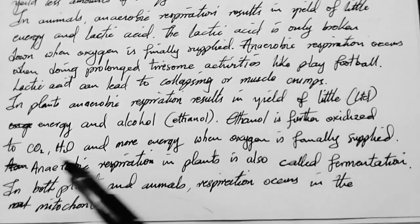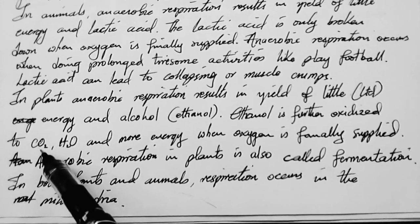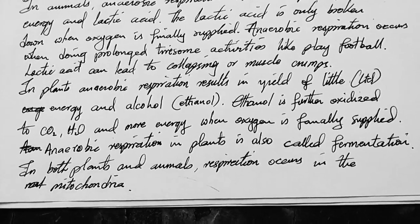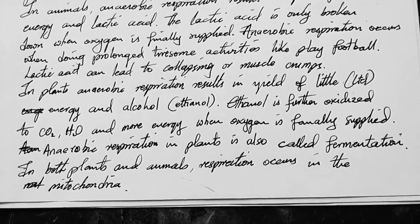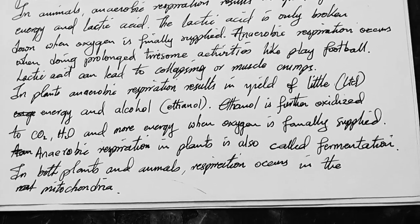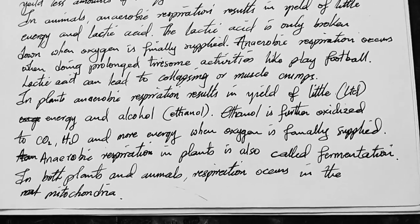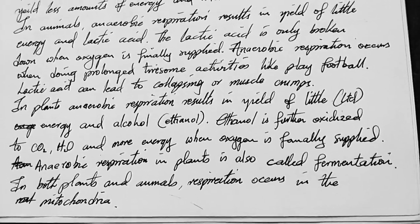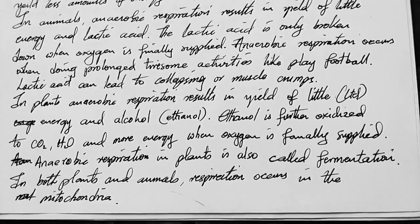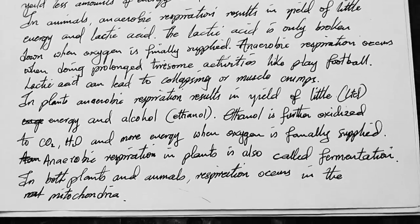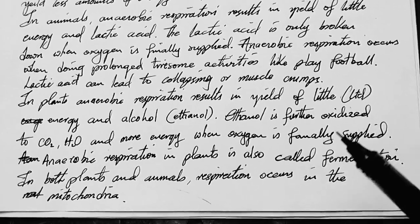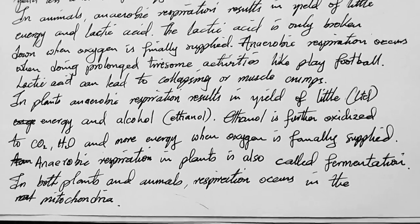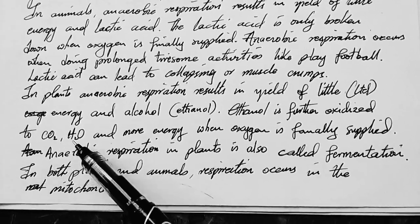The ethanol is further oxidized to water, carbon dioxide, and more energy when oxygen is finally supplied. Anaerobic respiration in plants is also called fermentation. In both plants and animals, respiration occurs in the mitochondria. The two differ in the way anaerobic respiration takes place. When ethanol is left by itself, it can turn to ethanoic acid due to the action of bacteria, but in plants it may accumulate before eventually being broken down to produce carbon dioxide, water, and energy.